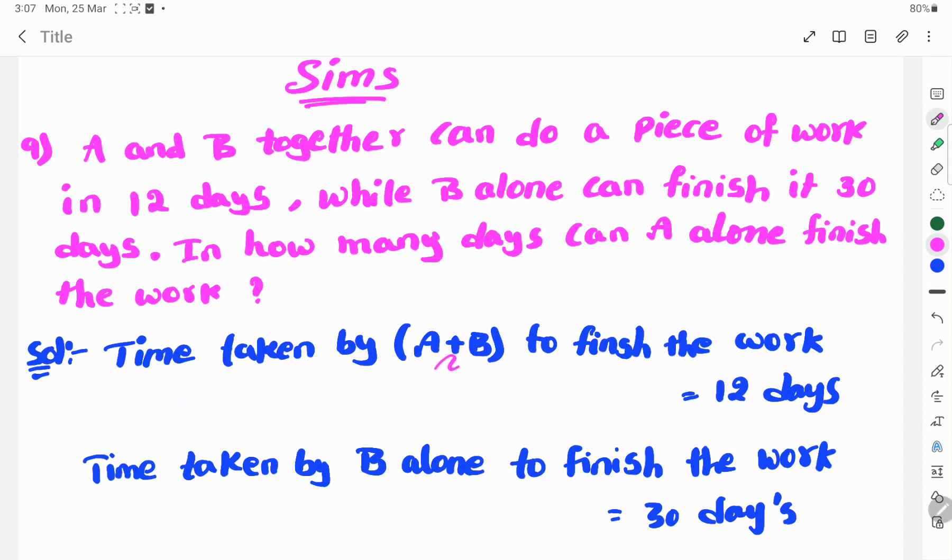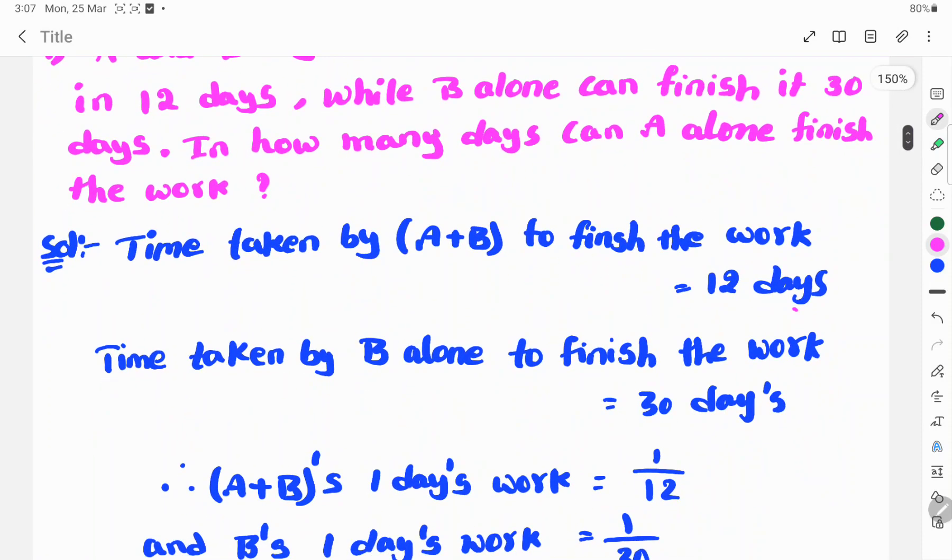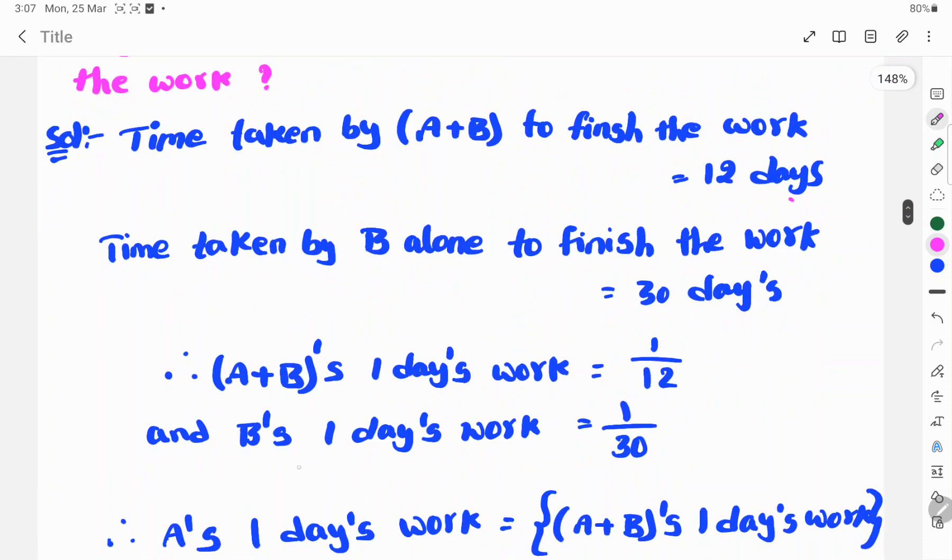Time taken by A plus B together to finish the work is 12 days, and time taken by B alone to finish the work is 30 days. We need to find A's work. So A plus B's one day's work is 1 by 12, and B's one day's work is 1 by 30.